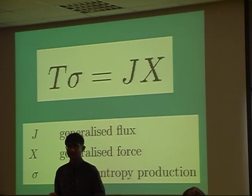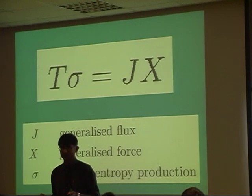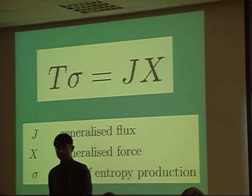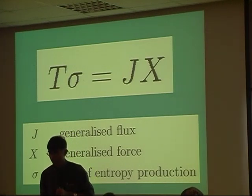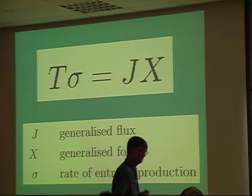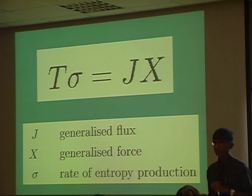So it turns out that whenever you can write an equation like this, J is proportional to X. Now this is just an experimental fact. I haven't proved anything. I've just given you an equation, and said that if I can write an equation like this, you will find J is proportional to X. The flux is proportional to the force. So let's try and prove that equation, that J will be proportional to X.